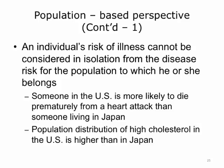A third important point for understanding population-based prevention is that an individual's risk of illness cannot be considered separate from the disease risk for the population in which he or she belongs. For example, someone in the United States is more likely to die prematurely from a heart attack than someone living in Japan, because the population distribution of high cholesterol in the United States as a whole is higher than in Japan. When people from Japan move to the United States, they actually begin to adopt the risk profile of the people living in the United States. A people's health or disease risk is in part determined by where they live.